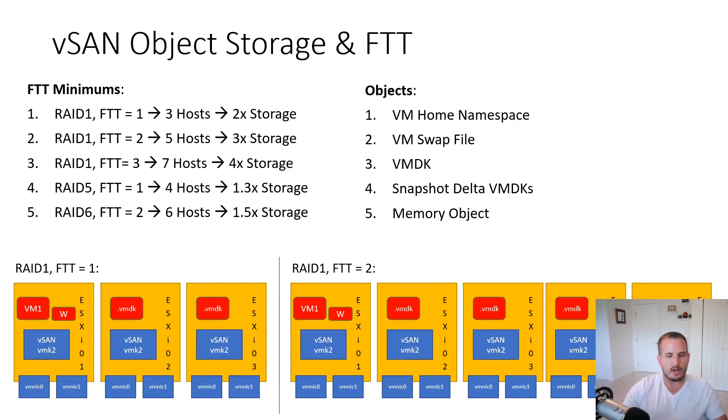It's also important to understand the failure to tolerate options. I have quite a bit listed out here, as well as the host requirements for each of those and the storage consumption for the different failure to tolerate scenarios. I provided a diagram here on the bottom for a couple of examples. If we look at the left here, this is our failure to tolerate equals one scenario. When we say our failure to tolerate equals one, that means we can lose one host. So we can lose this guy here and we can still have an active application. In this scenario, we have our three hosts minimum. You can see across these three hosts, we have our VM, we have our two VMDK files, very similar to what we've been showing earlier in today's video. We also have a witness, which is composed of only VM metadata.